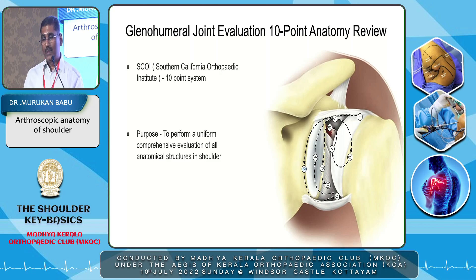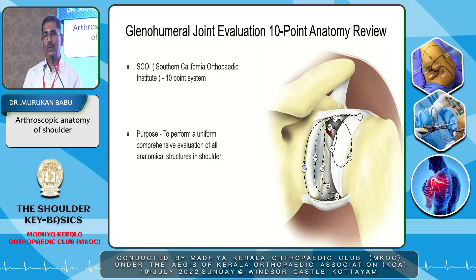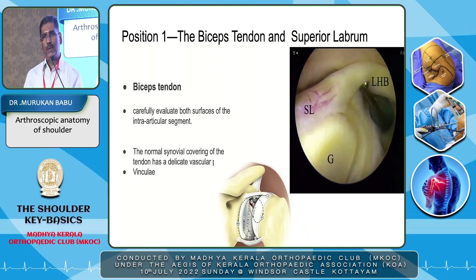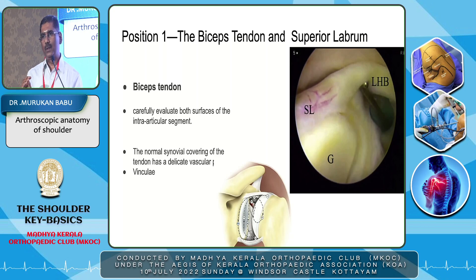In each position you are seeing certain anatomical structures in a different way. The purpose of this evaluation is to perform a uniform, comprehensive evaluation of all the anatomical structures in the shoulder. The first position is seeing the biceps tendon and the superior labrum. When you introduce the scope through the posterior portal, the first structure you see is the biceps tendon.